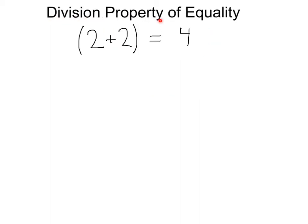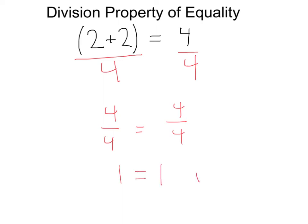Here we have the division property of equality. We have two plus two equals four, which we know is true. Let's say we divided each side by four — divide the left by four, divide the right by four. If I simplify these parentheses, that's going to give me four over four, which is going to equal four over four. That simplifies to one equals one, which is true. We see how when we divide each side by the same amount, we're still going to be equal.